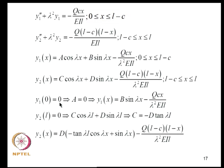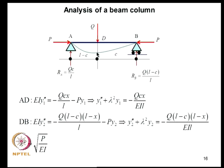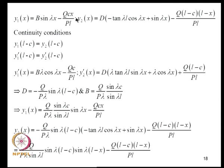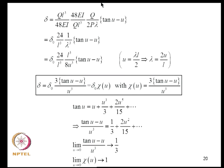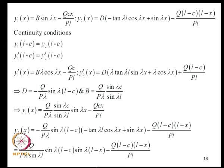Applying boundary conditions: at X = 0, Y1 = 0 gives A = 0. At X = L, Y2 = 0 allows elimination of C in terms of D. Two constants remain and are determined by continuity conditions at X = L−C: Y1(L−C) = Y2(L−C) and Y1'(L−C) = Y2'(L−C). Imposing these conditions and simplifying yields expressions for B and D, giving Y1 and Y2 explicitly.